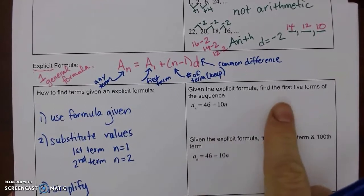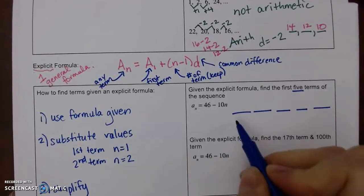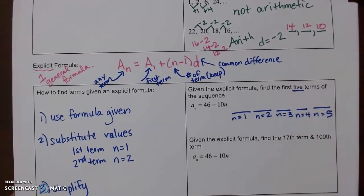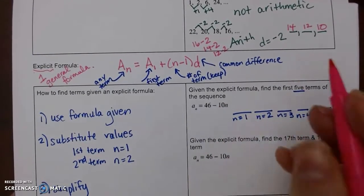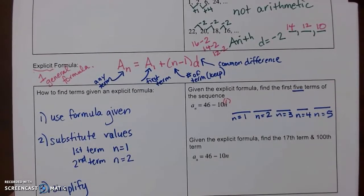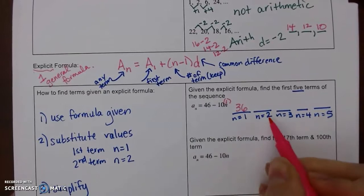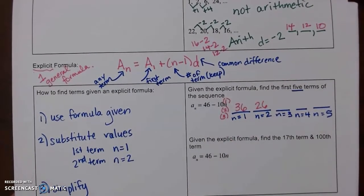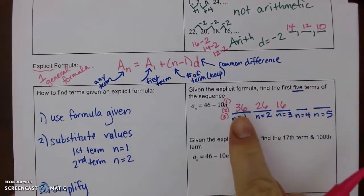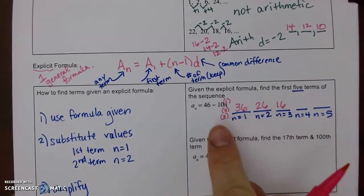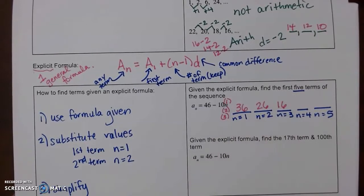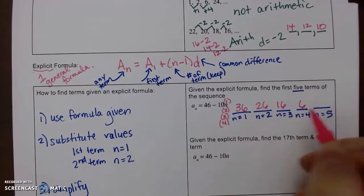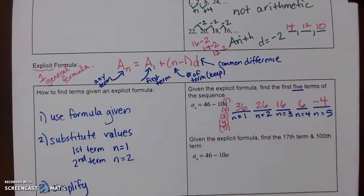Given the explicit formula, find the first five terms. I substitute n = 1, 2, 3, 4, 5. For n = 1: 46 minus 10 = 36; n = 2: 46 minus 20 = 26; n = 3: 46 minus 30 = 16. Once you see the pattern of subtracting 10 each time, you can continue: n = 4 gives 6, and n = 5: 46 minus 50 = -4.